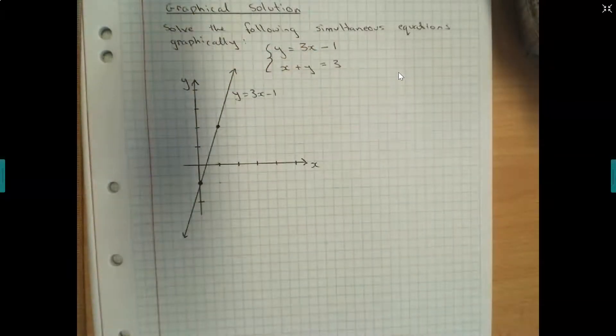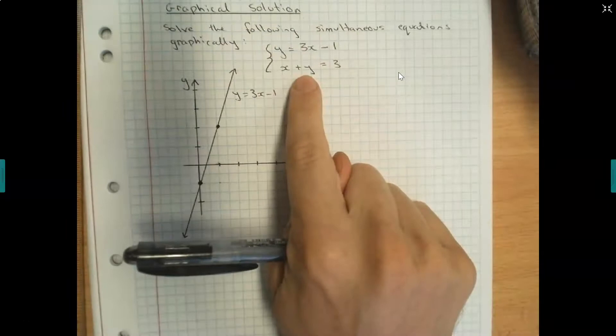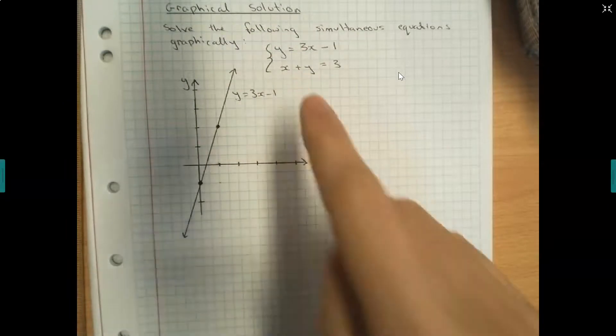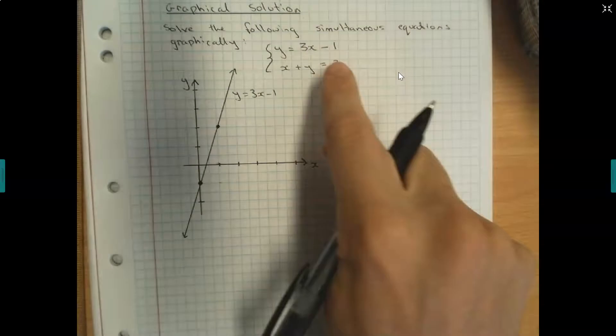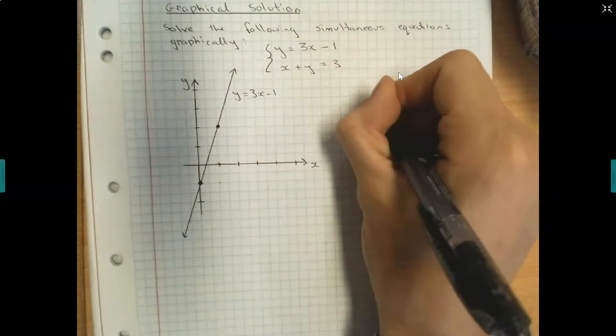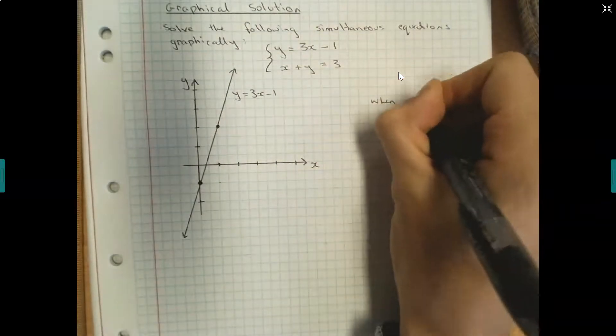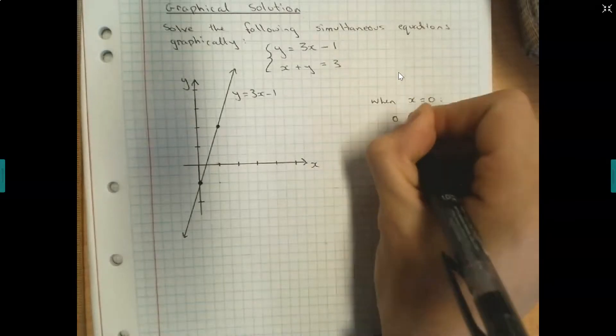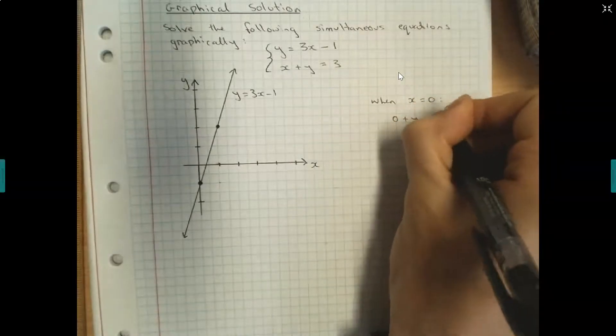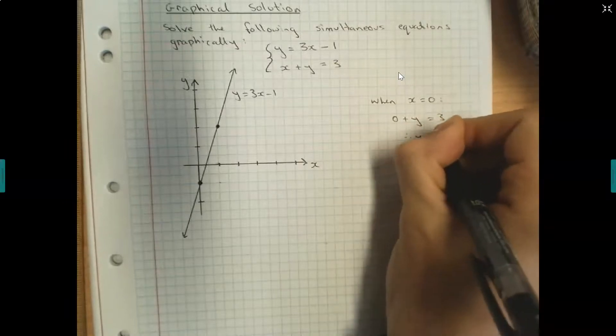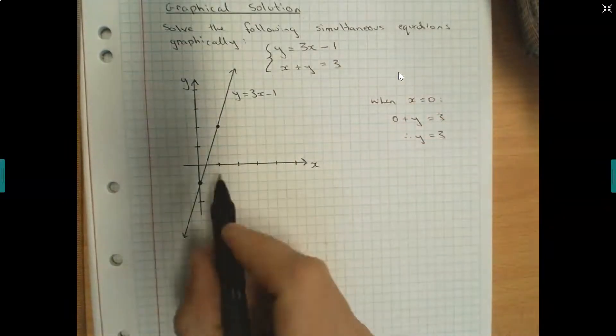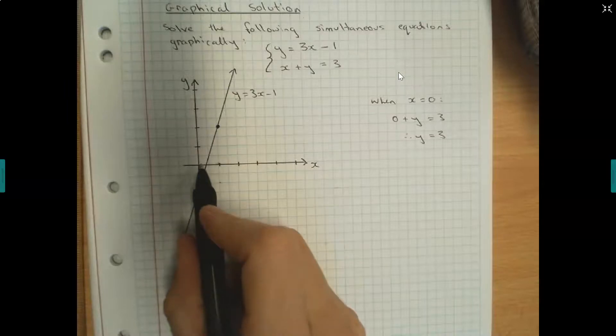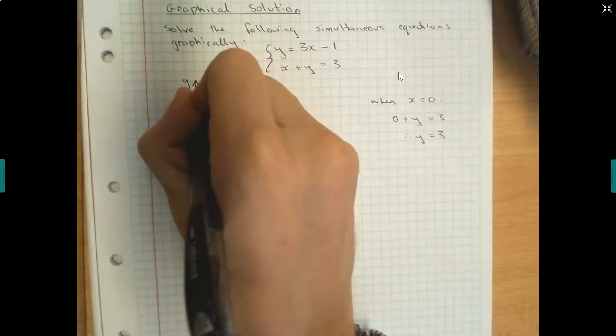For equation number 2, again, we just need to plot two points. If we go through the method that we learnt last week, if I look at when x is equal to 0, I know that 0 plus y is equal to 3. Therefore, y is equal to 3. So when x is equal to 0, y is equal to 3, I'll plot a point here.